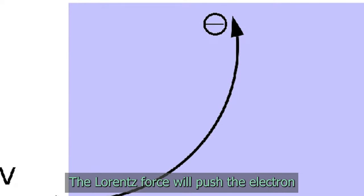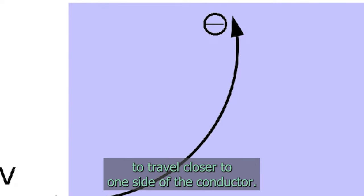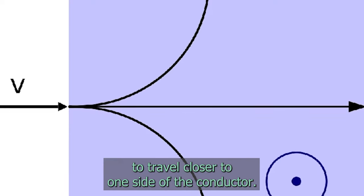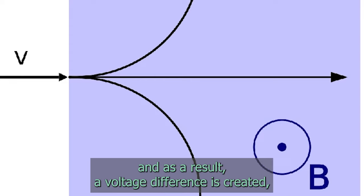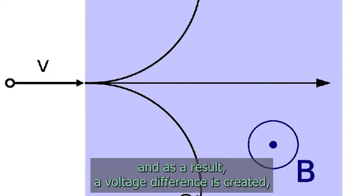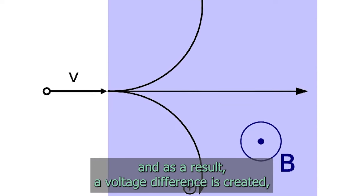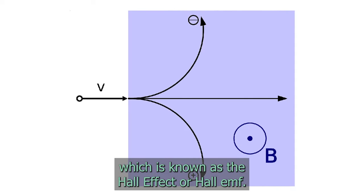The Lorentz force will push the electron to travel closer to one side of the conductor. This will create a charge separation in the transverse direction and as a result a voltage difference is created, which is known as the Hall effect or Hall-EMF.